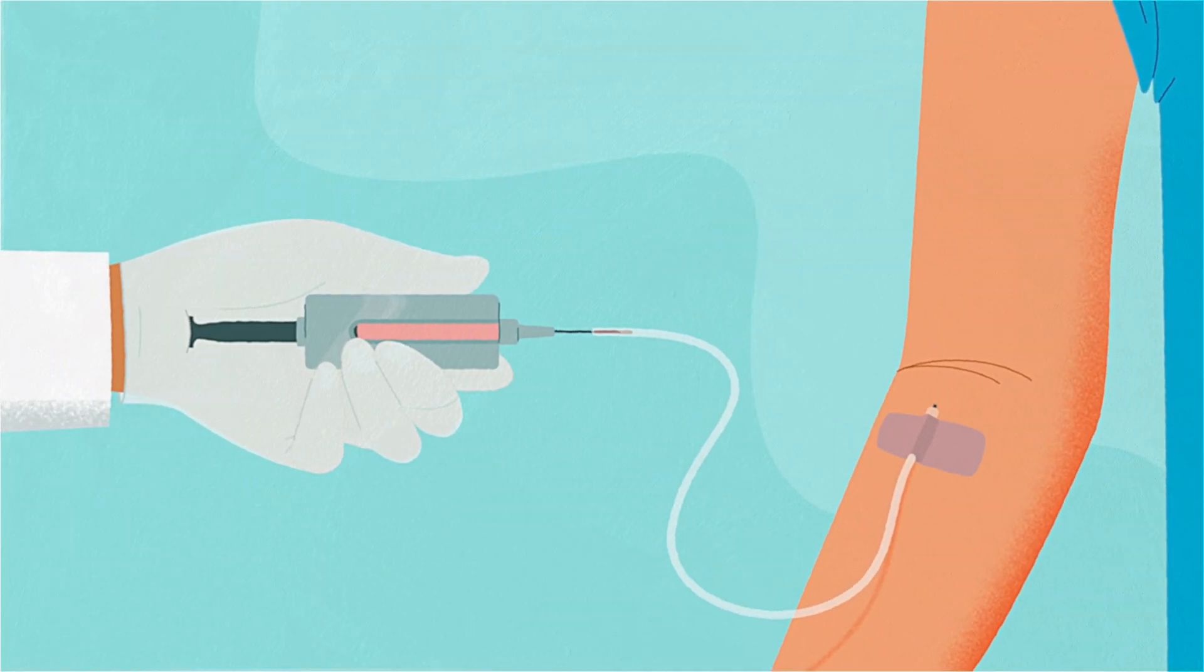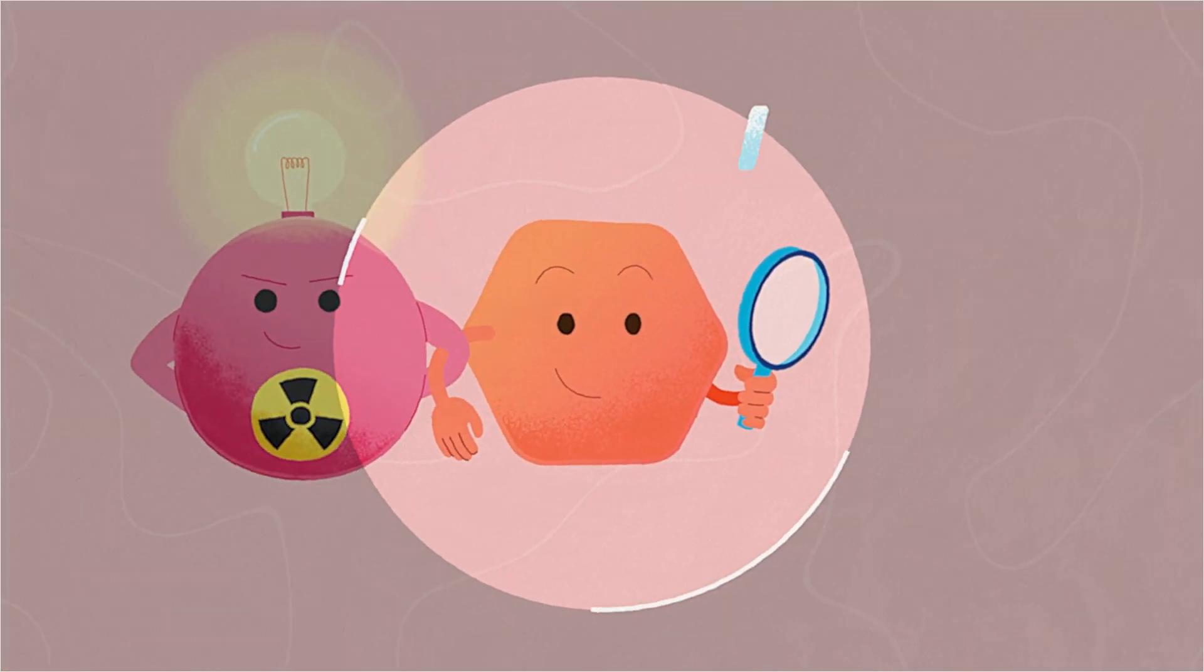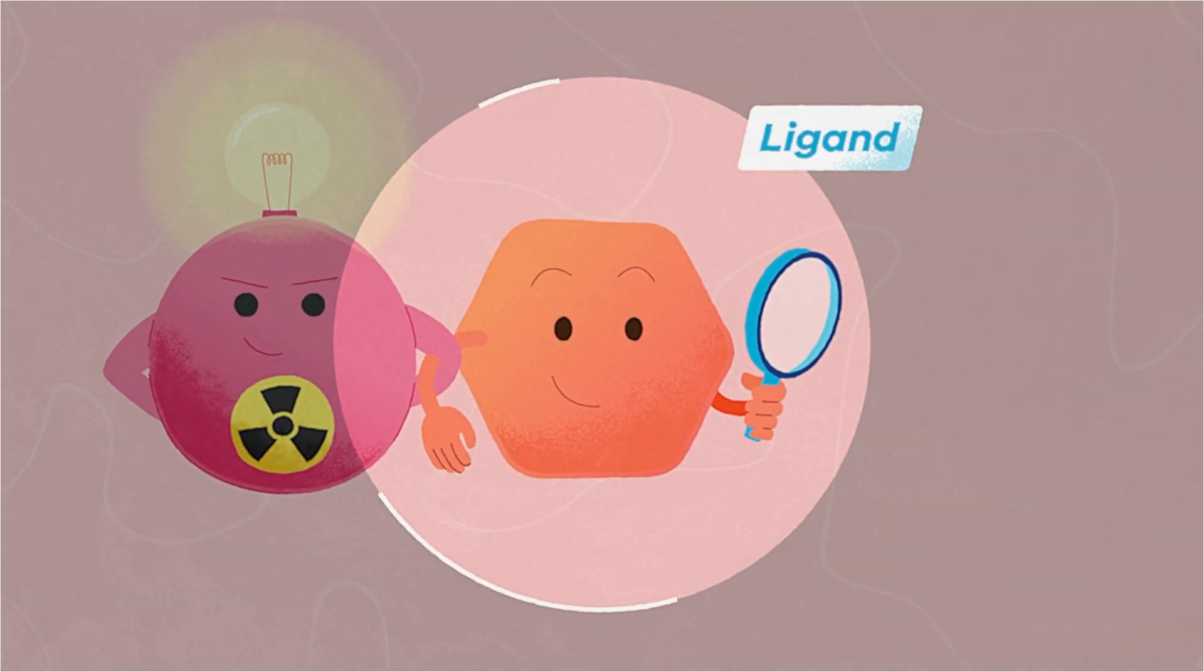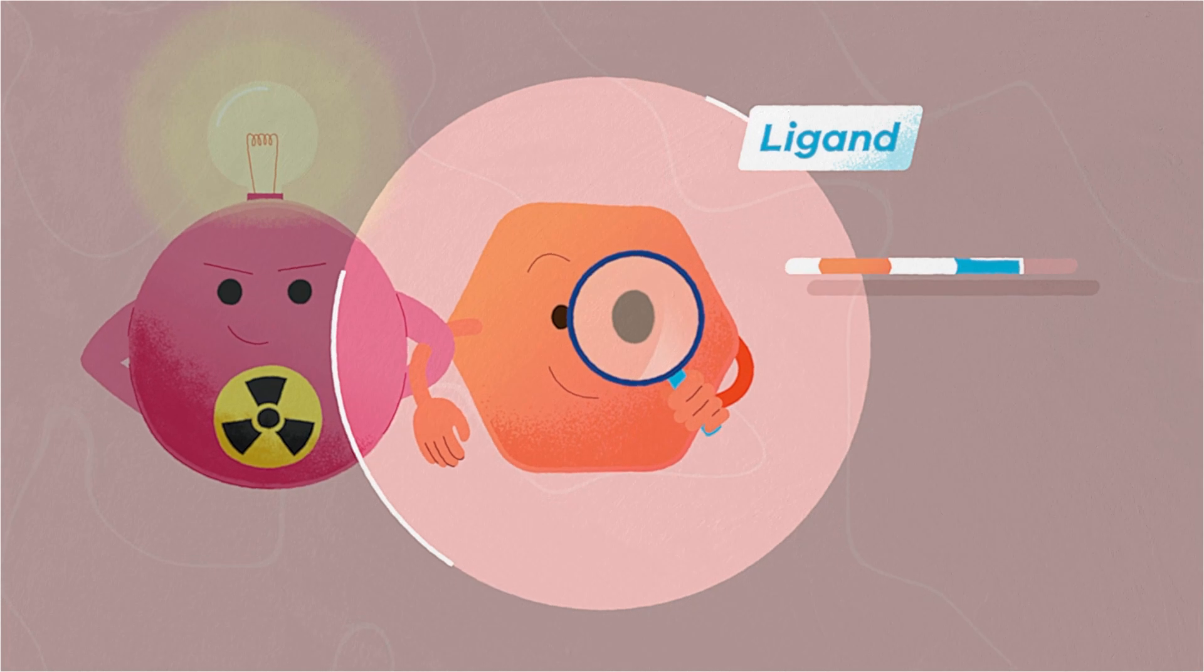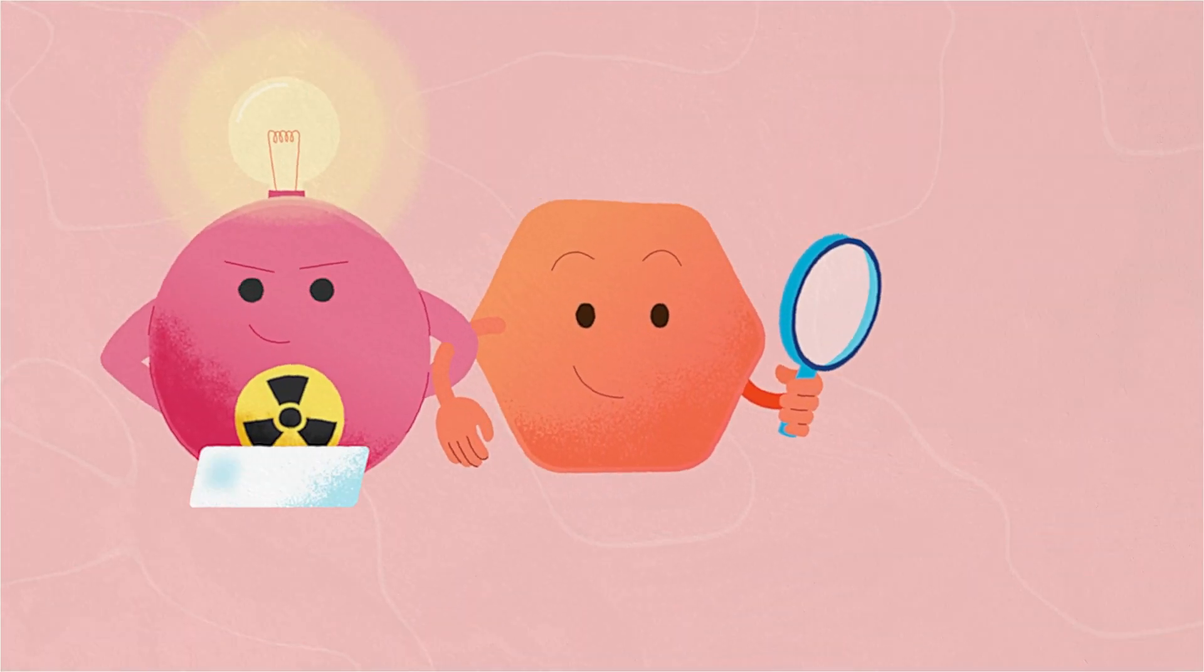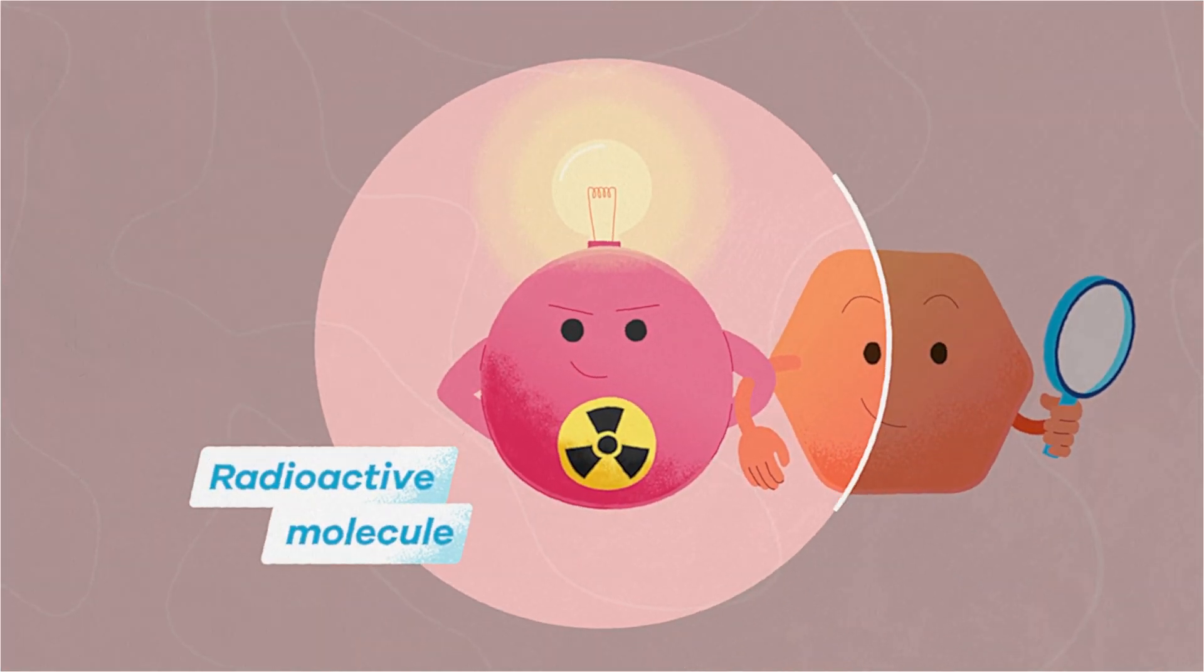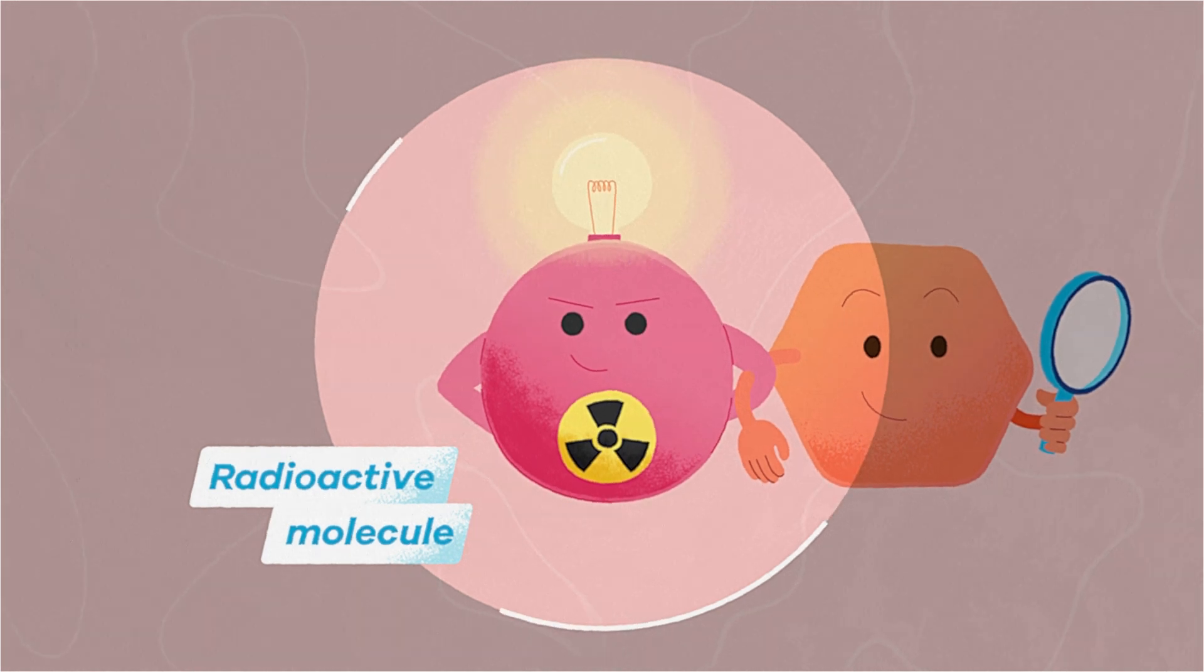Administered by intravenous injection, the imaging product is composed of a ligand which has the property of binding directly to the molecular target. It is specific to it as their shapes fit perfectly with each other, and a radioactive molecule that emits low-dose radiations that can be detected with scanners to create images.